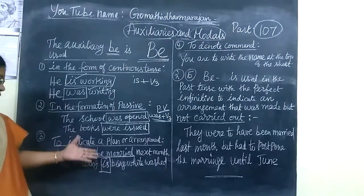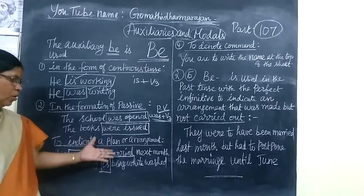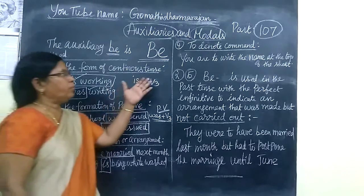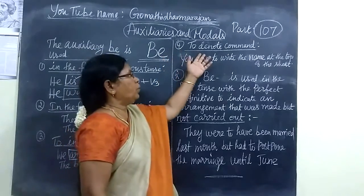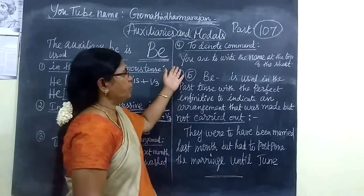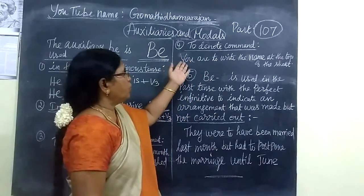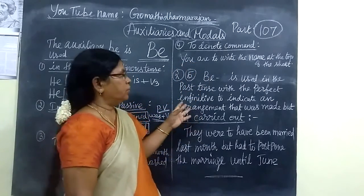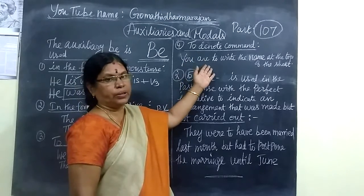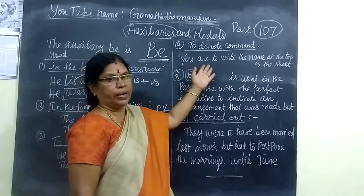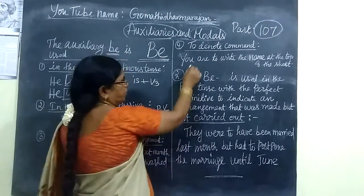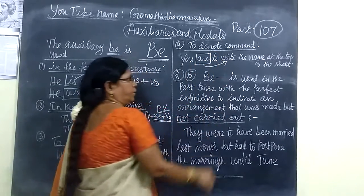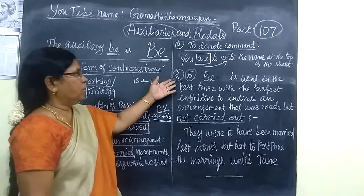So when we indicate a plan or arrangement or agreement, we use the be-form. And in the fourth use, to denote a command. A command on instruction — the be-form is useful. For example: 'You are to write the name at the top of the answer sheet.' This means: 'You are supposed to write the name at the top of the answer sheet.'